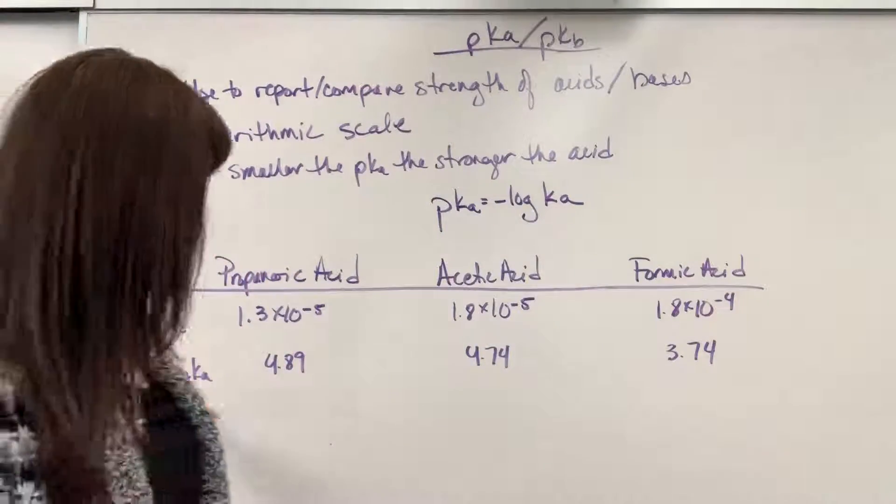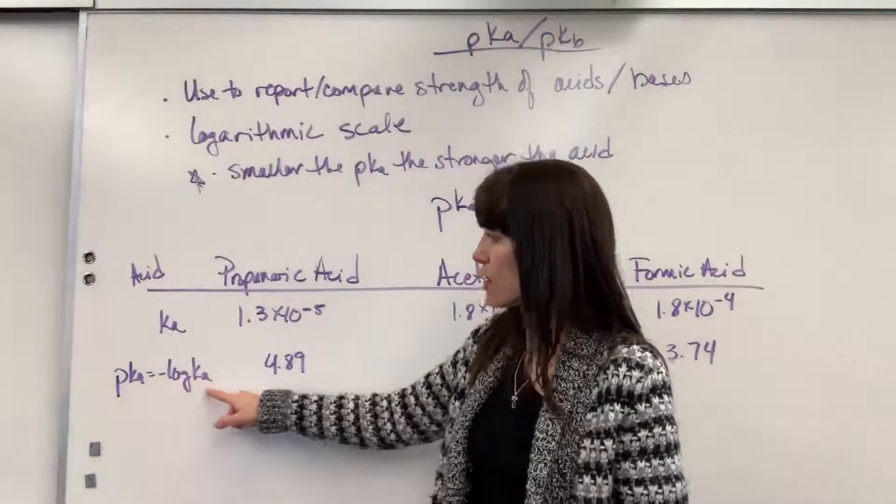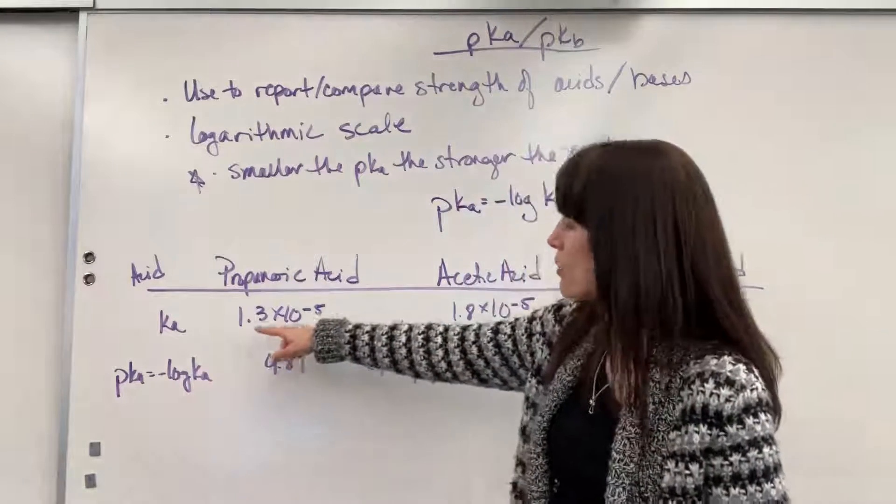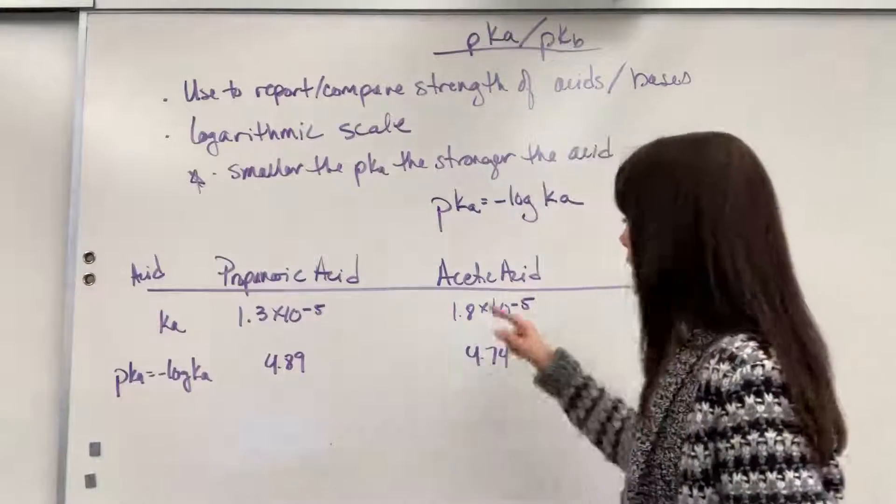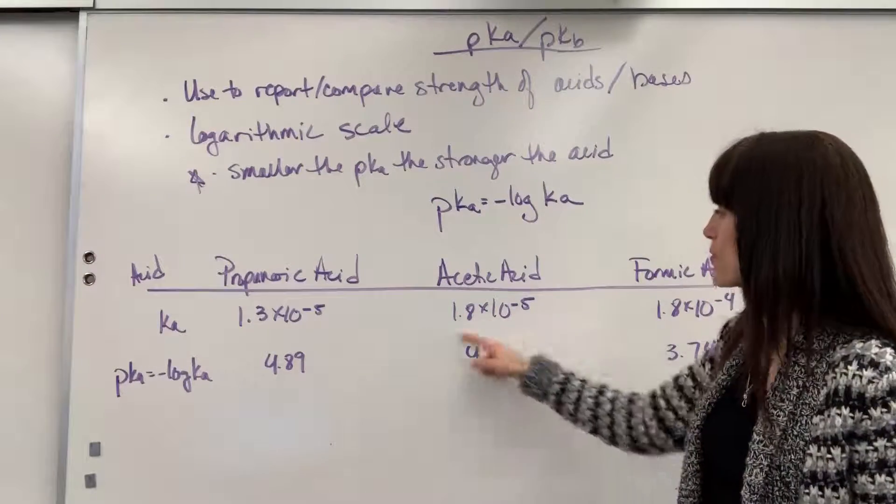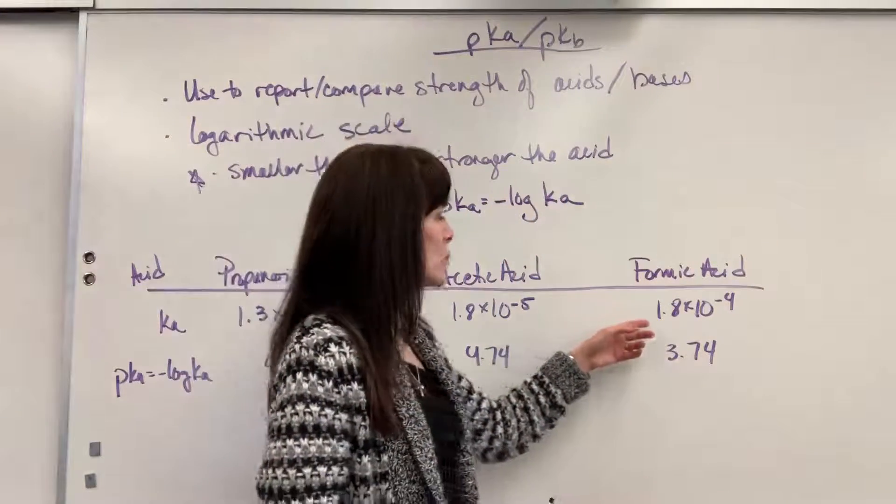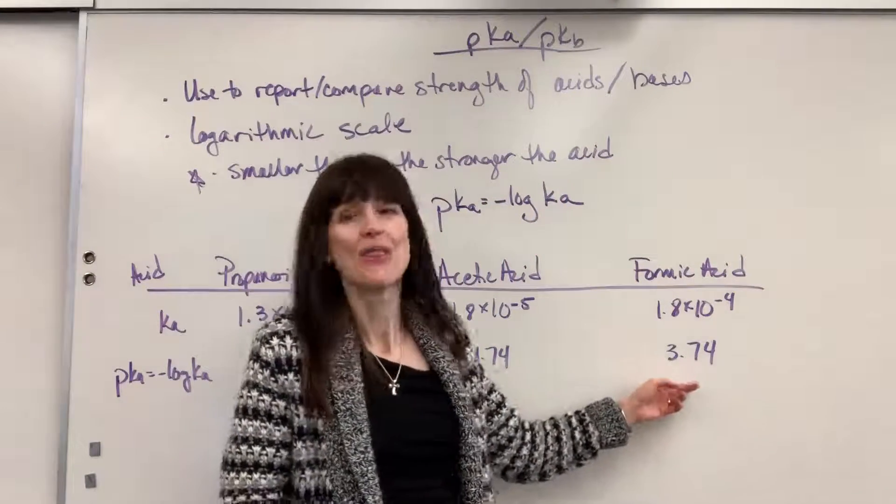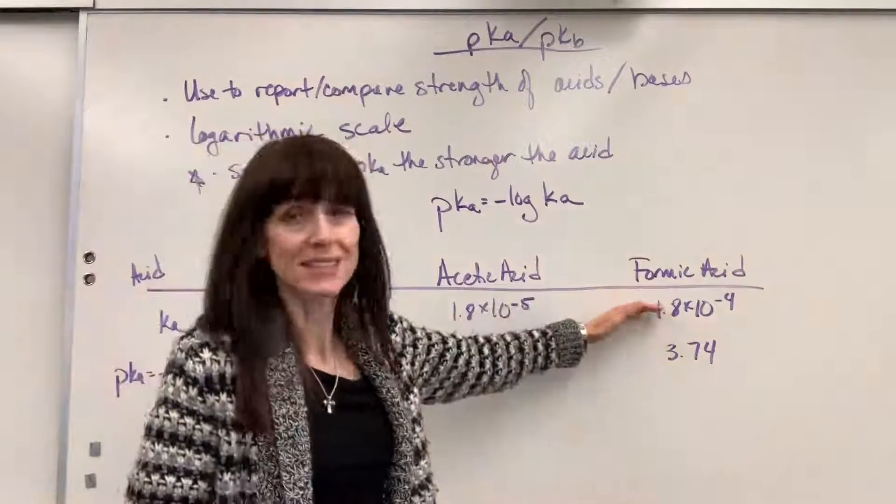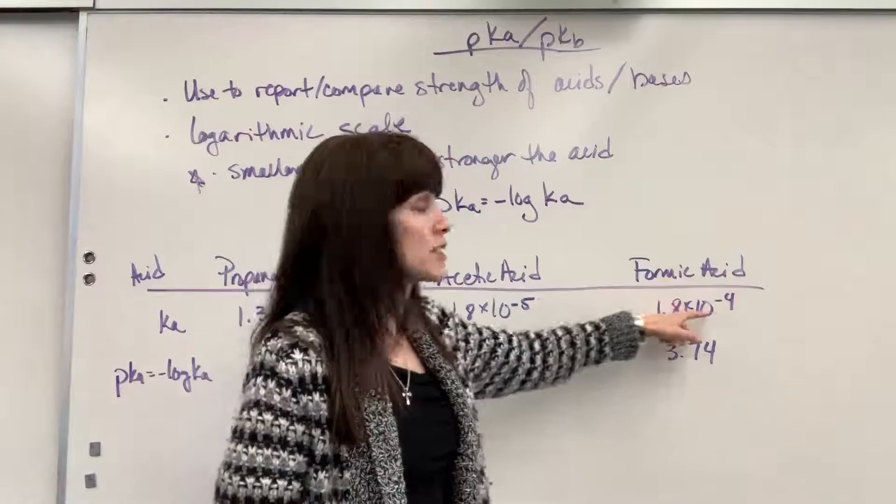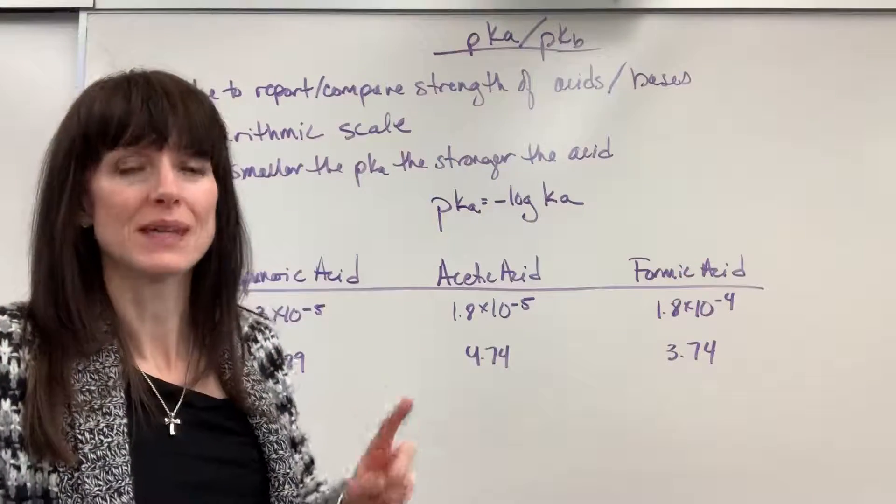So now, I took all three of these and I just put it into the calculator and did the negative log of Ka. So I did the negative log of 1.3 times 10 to the minus 5, there it is, 4.89. Negative log of 1.8 times 10 to the minus 5, 4.74. And negative log of the 1.8 times 10 to the minus 4, 3.74. So you'll notice here, formic acid is the strongest acid because it has the largest Ka and it has the smallest pKa.